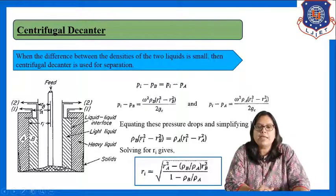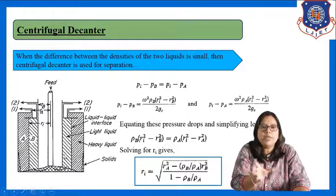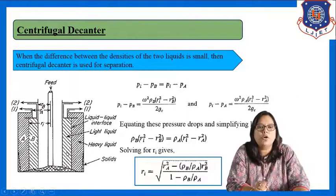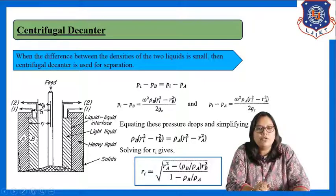The two liquids are differentiated here. Liquid A is the heavy liquid and liquid B is the light liquid. As the centrifugal force is produced, the liquid is thrown outward towards the wall of the bowl. RA is the radius of the overflow of the heavy liquid, and RV is the radius of the overflow of the light liquid.